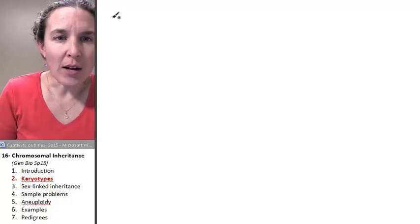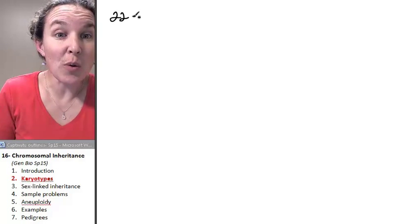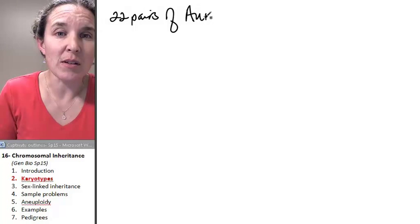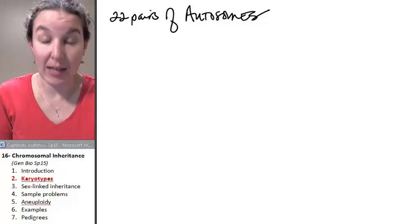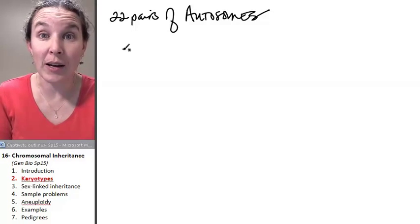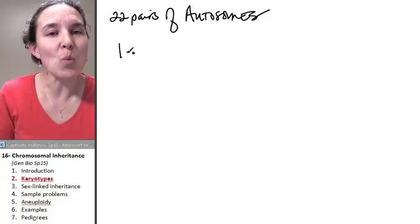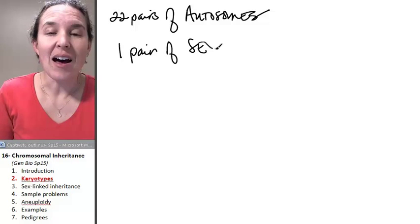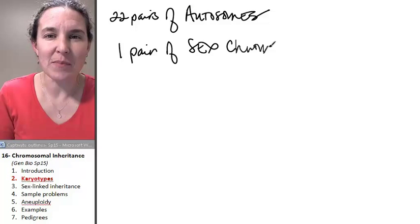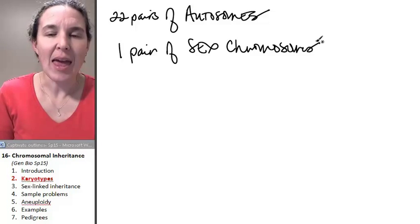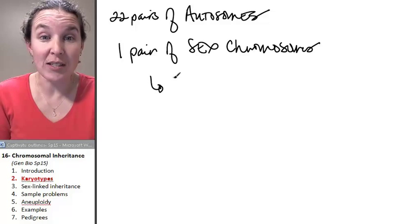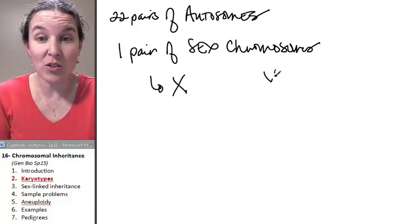So autosomes, there are 22 pairs of autosomes in the human genome or in each one of your diploid cells. And then there's one pair of what? Of sex chromosomes. And you have two possibilities. You have two options. There's an X chromosome and there's a Y chromosome.